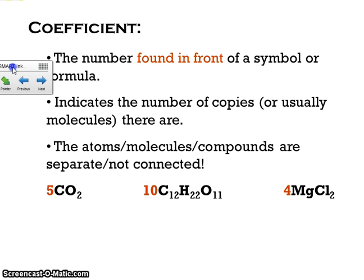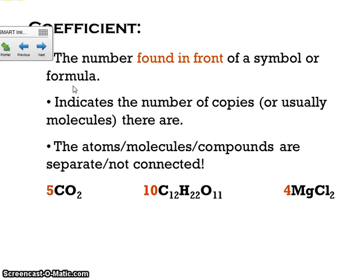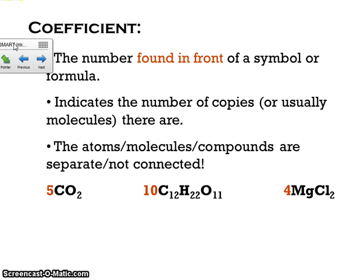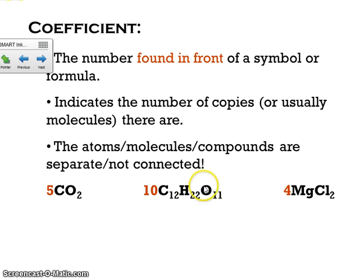The last part is the coefficient. The coefficient is a number found out in front of your symbol or formula. Here's a number out in front of CO2 — there are your symbols, your subscript, and your coefficient highlighted in red. Basically, your coefficient tells you how many copies of that molecule or compound you're going to have. So here we have five copies of a CO2 molecule, ten copies of C12H22O11, and four copies of MgCl2.